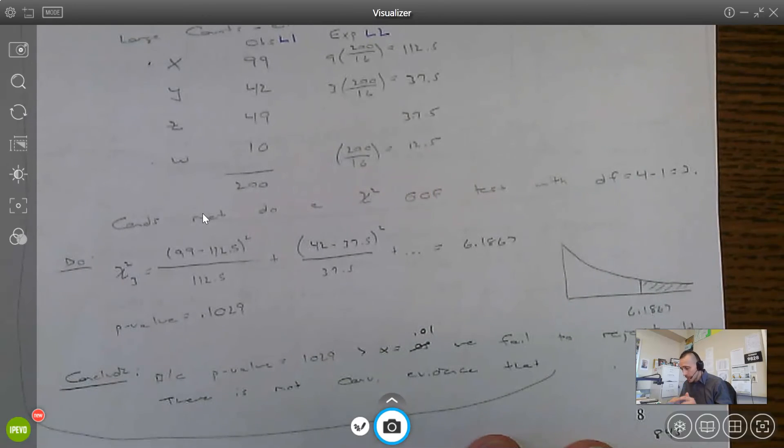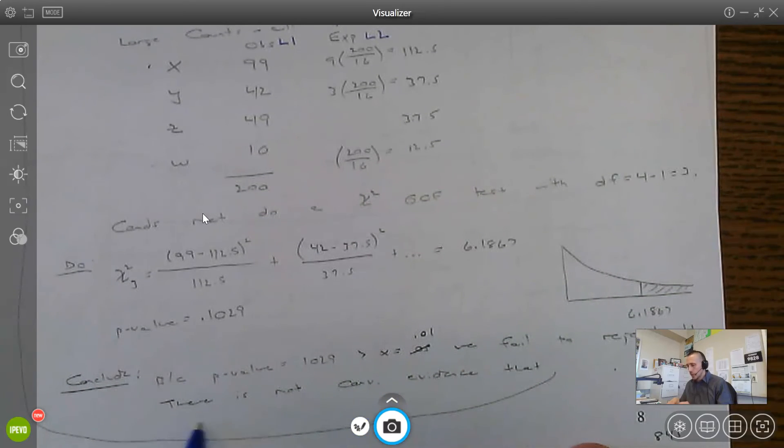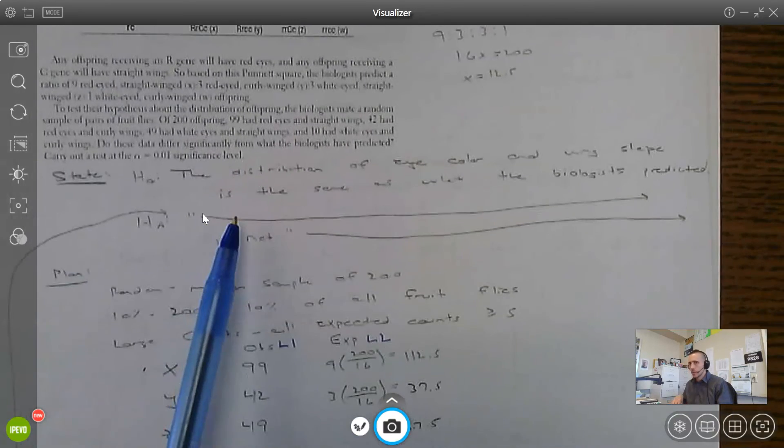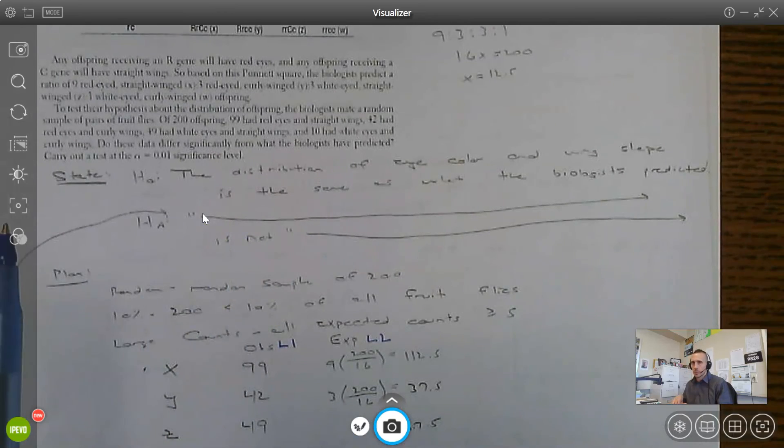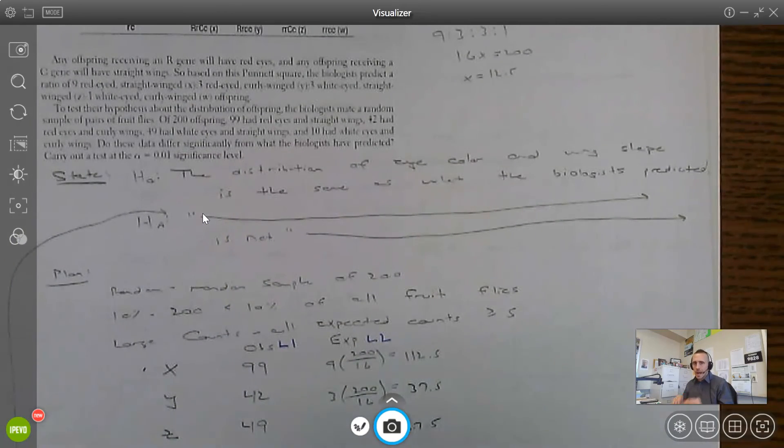They had a 1% significance level. So because the p-value 0.1 is greater than 0.01, we fail to reject the null. We don't have convincing evidence that the distribution of eye color and wing shape is not the same as what the biologist predicted.